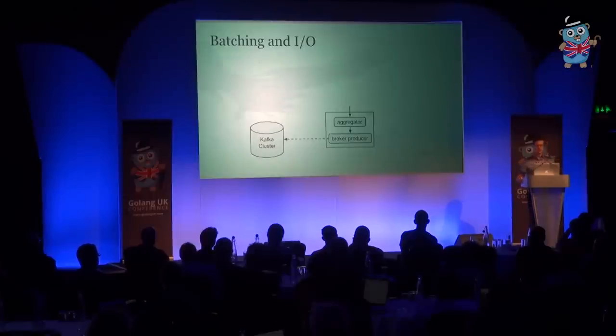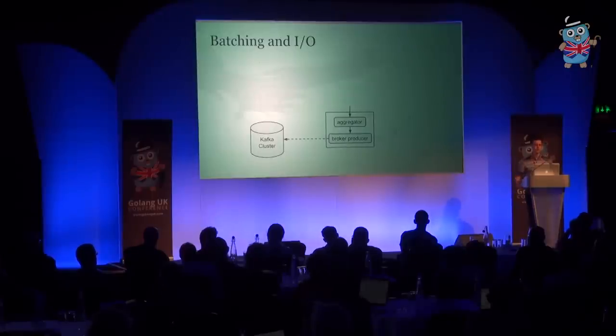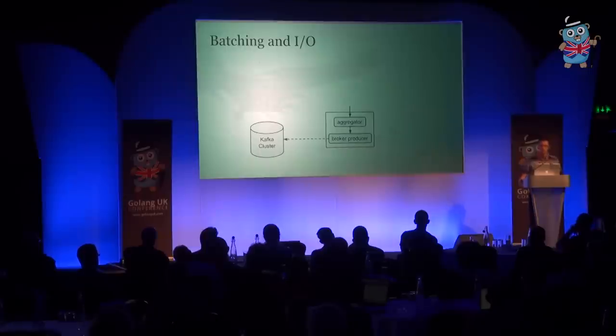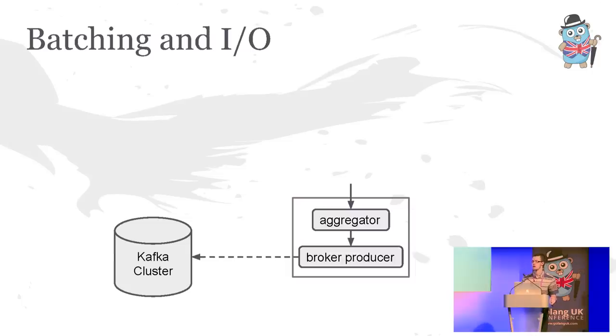The other complication is handling timer events. That configuration requirement involves, in a lot of cases, setting timers to say you don't want to hold anything for more than 500 milliseconds. Those timer events have to fire and be handled. Go does not let you select on a channel and a network request at the same time — which I find a bit funny, given the select statement's origin as actually selecting only on network requests. So we have to split that out into two goroutines: the aggregator, which does most of the real work, and the broker producer, which is just responsible for putting things on the wire and handling responses.